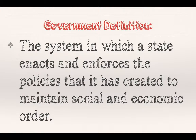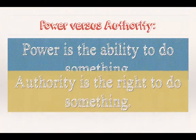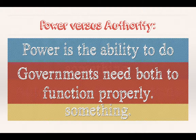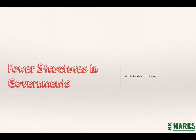The government definition is the system in which a state enforces the policies that it has created to maintain social and economic order. Our government's sole purpose is to maintain social and economic order while preserving those four roles of government. Power is the ability to do something; authority is the right to do something. We need to blend both for our government to function properly. We can have all the power in the world, but if we don't have the authority to act on it, it's meaningless — and vice versa. You need both to function as a government.